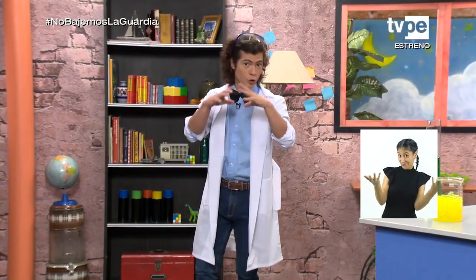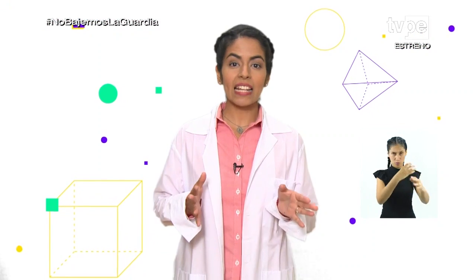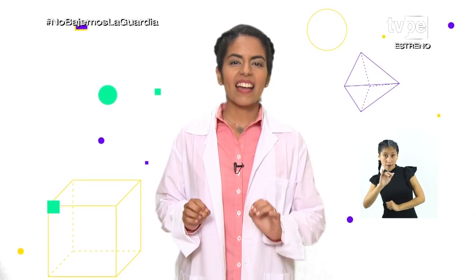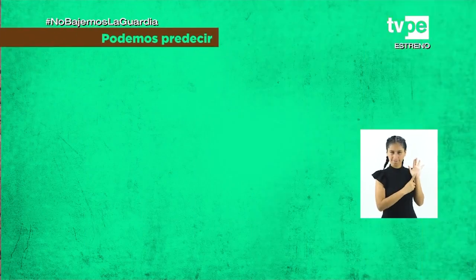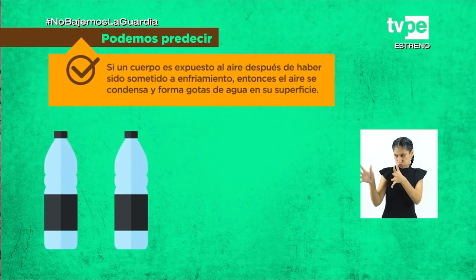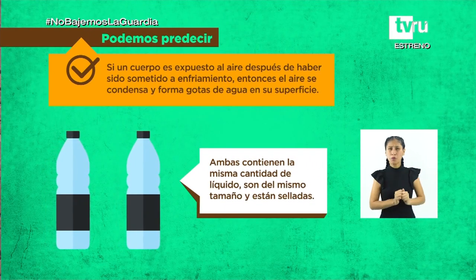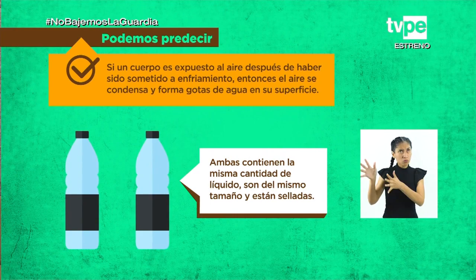En estos tipos de investigación donde los experimentos son controlados, entran en juego dos tipos de variables bien diferenciadas. Se trata de una prueba científica realizada bajo condiciones controladas, en donde una de sus variables es independiente, es decir, causante del fenómeno o de su modificación, mientras que la otra variable es dependiente, vale decir, es el efecto que provoca la variable independiente en el fenómeno observado. Así se puede predecir si un cuerpo es expuesto al aire después de haber sido sometido a enfriamiento, el aire se condensa y forma gotas de agua en su superficie.